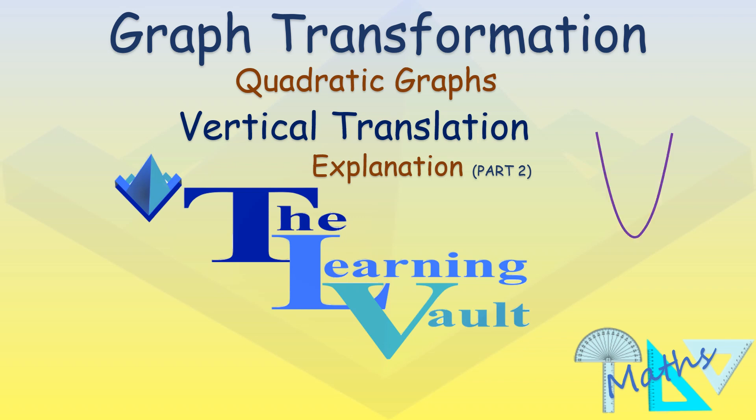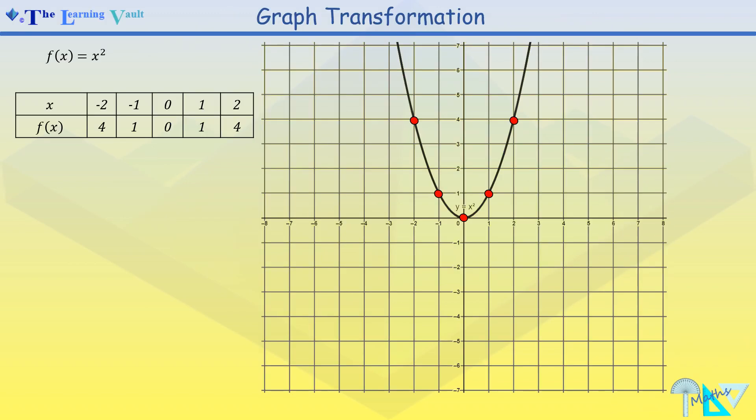Welcome to this video on graph transformation vertical translation explanation part 2. Demonstrated here is the graph of x squared with the coordinate points using the range of values from negative 2 to 2.